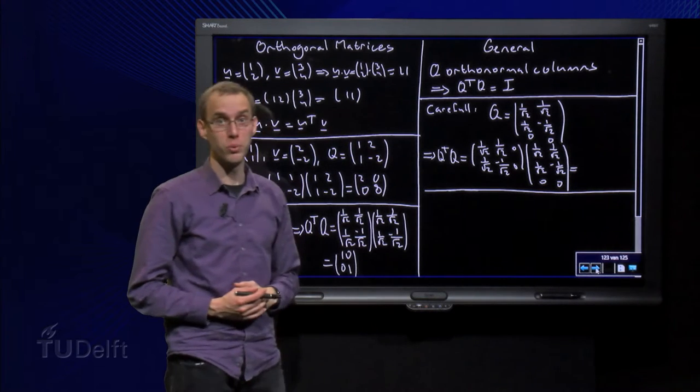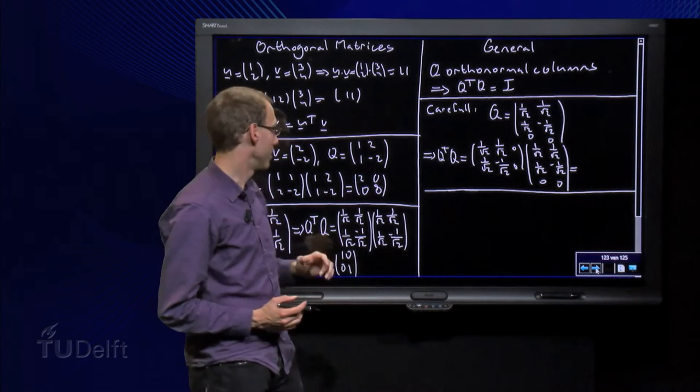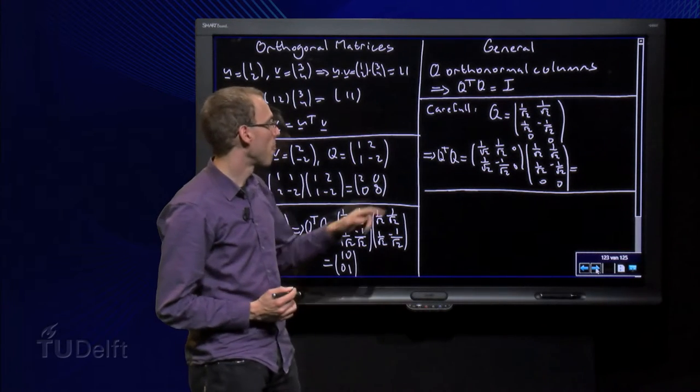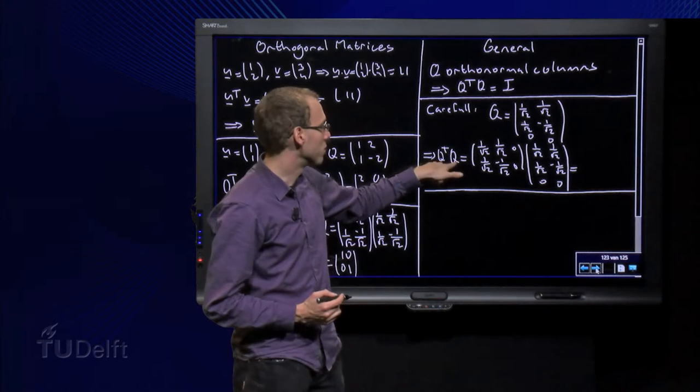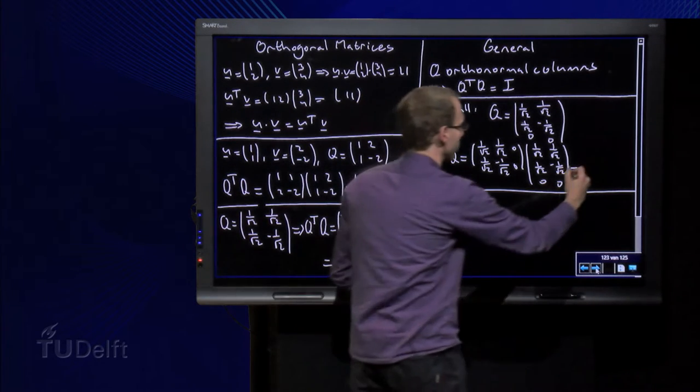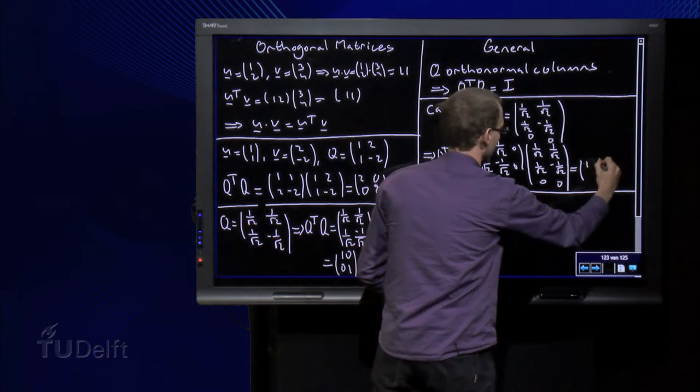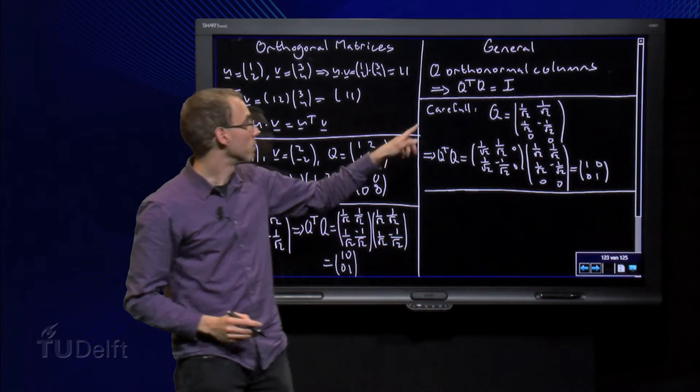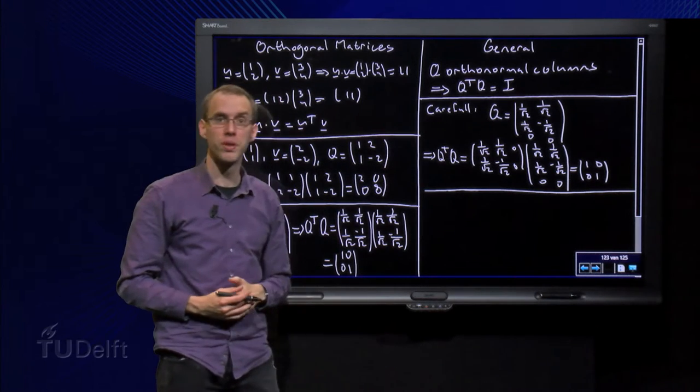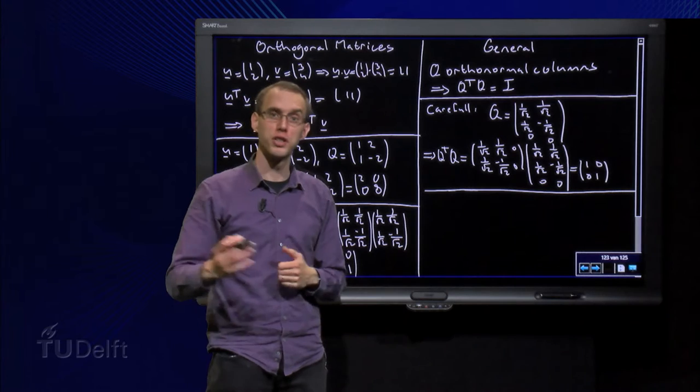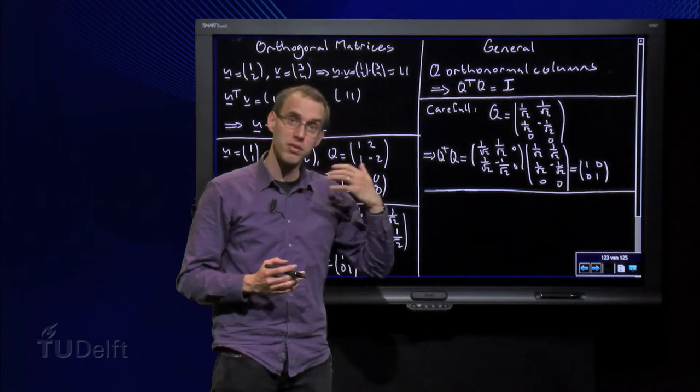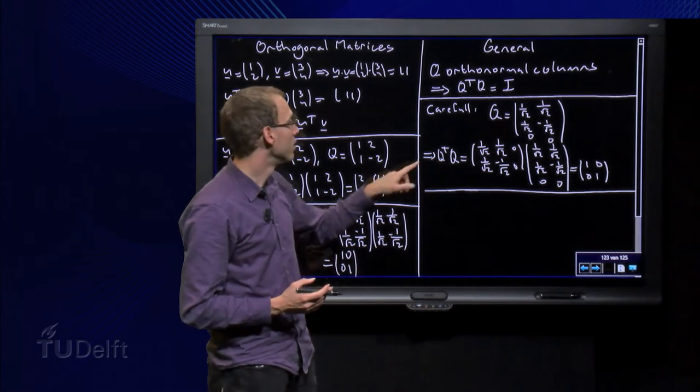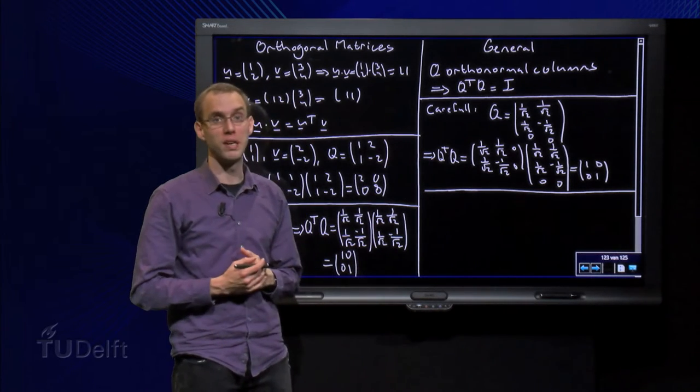Here we also have a Q with orthonormal columns, it is basically the same Q as this one, but I added a row of zeros. So if you compute Q transpose times Q, the calculation goes almost the same, and it yields also the identity matrix. But is Q transpose now the inverse of Q? Well, no, we can only have inverse matrices when we have square matrices. You only have the inverse of a matrix if a matrix is square, so Q transpose is not the inverse matrix of Q.